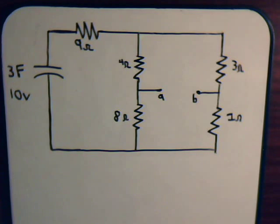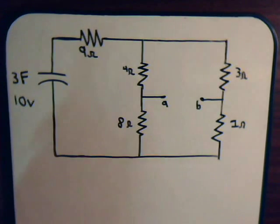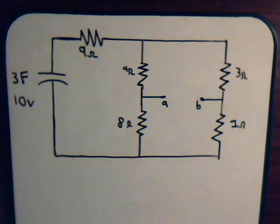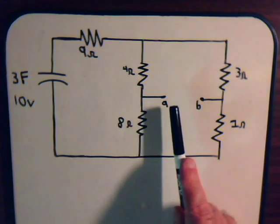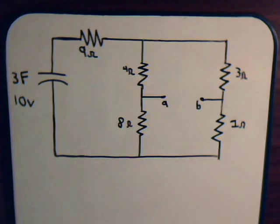In this video, we're going to consider a capacitor of 3 farads. It's been charged up to a total of 10 volts, and we're going to let it discharge across the circuit. When it does so, we want to know what will be the voltage drop across points A and B.